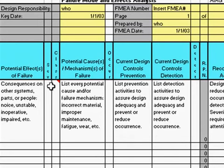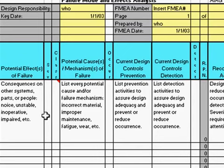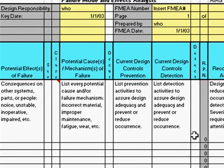The columns in between are your scores. You would indicate, first of all, the severity of that consequence. Causing an accident or having a baby swallow a knob would be a fairly high severity. You would also indicate the likelihood of occurrence and the likelihood of detection.